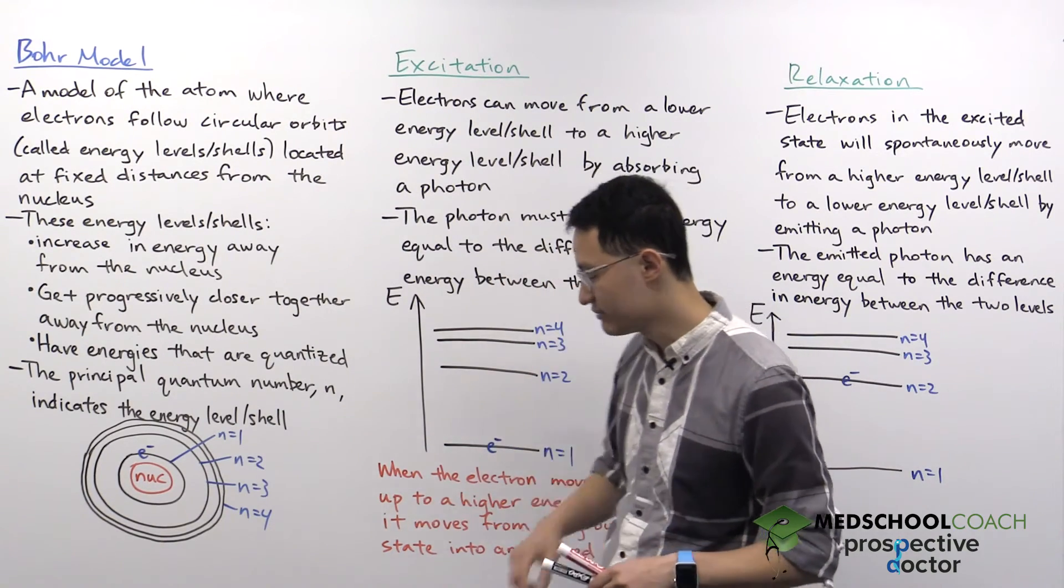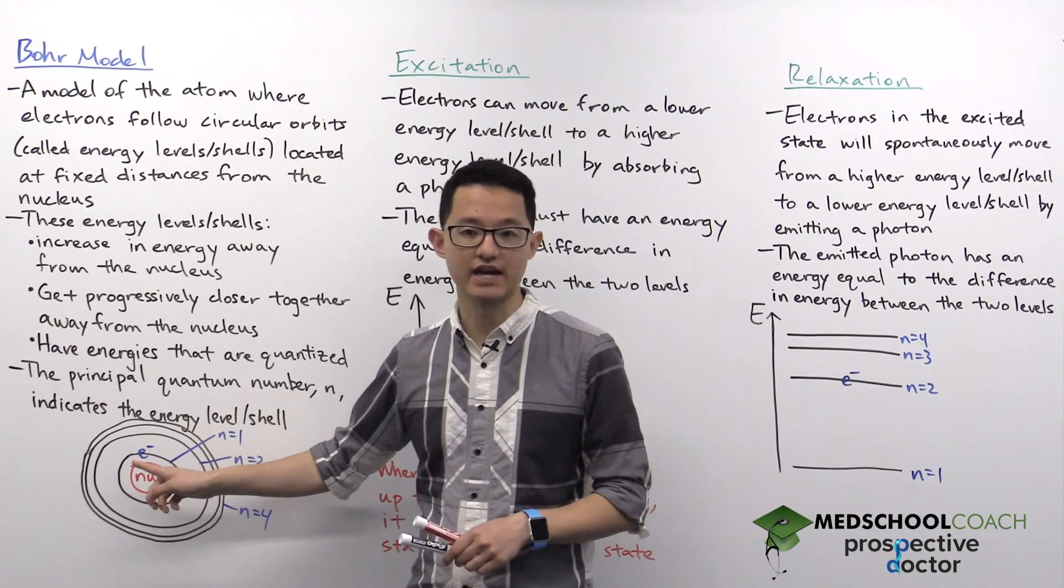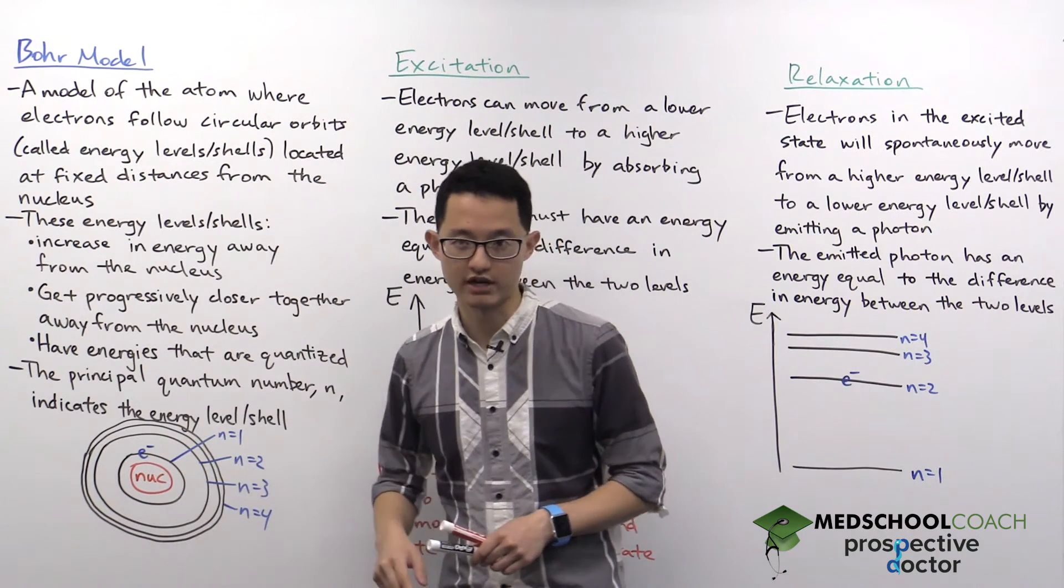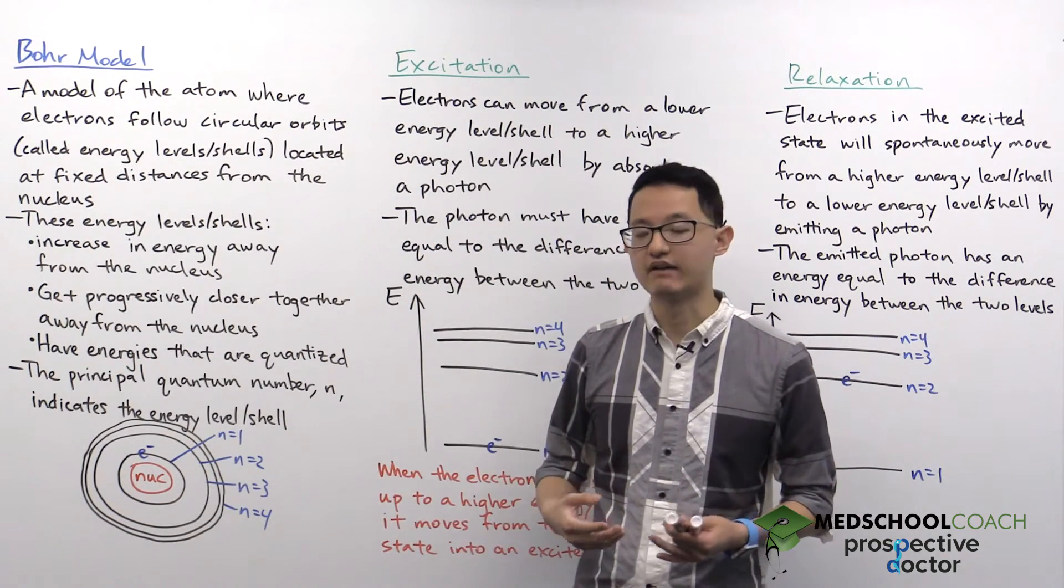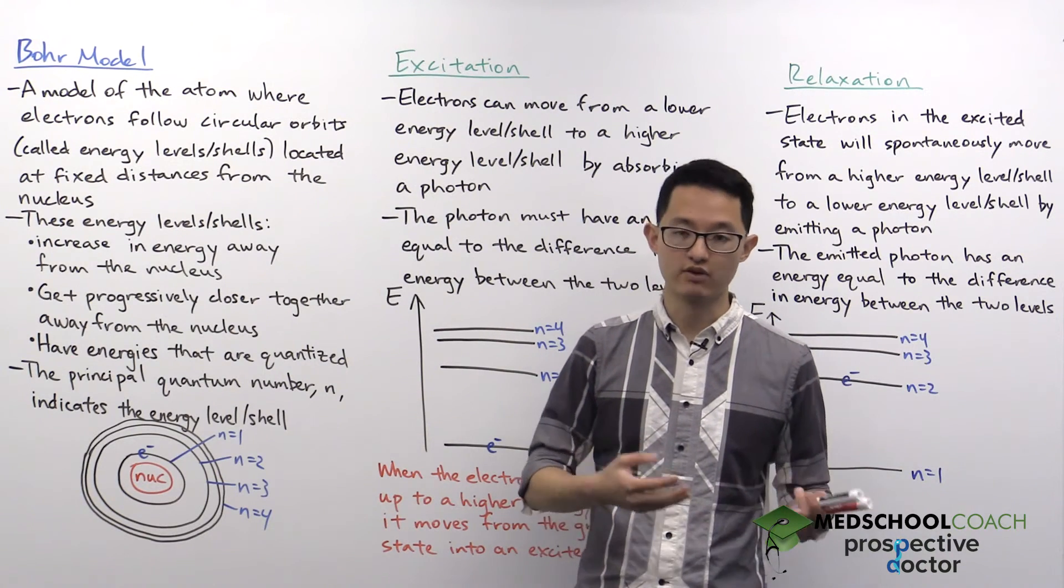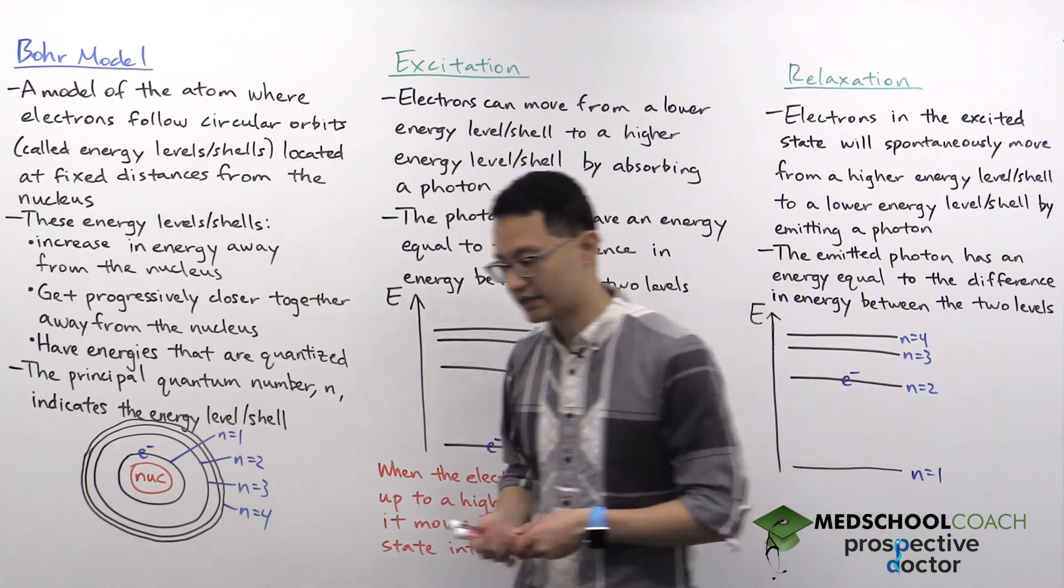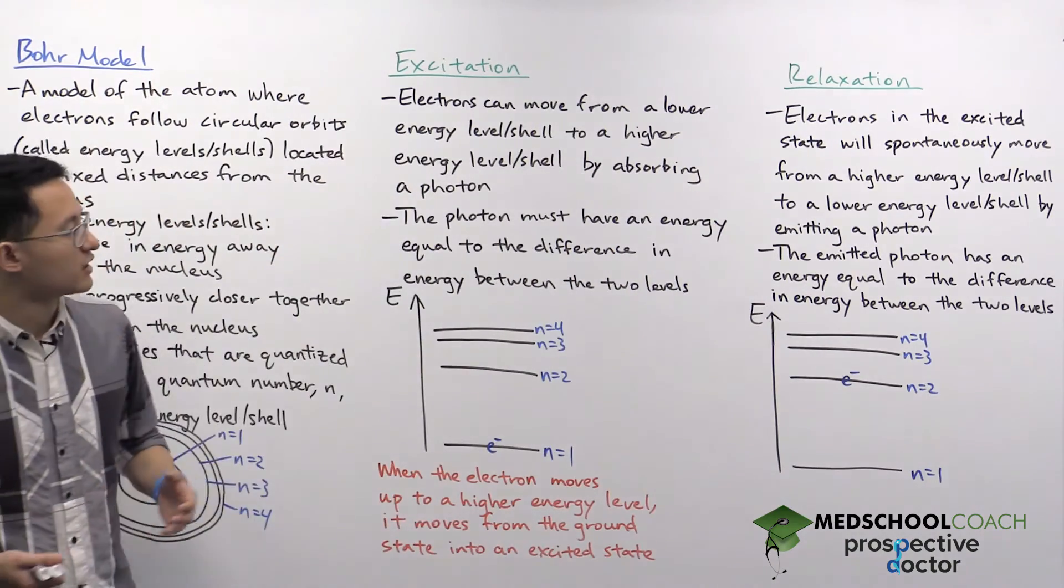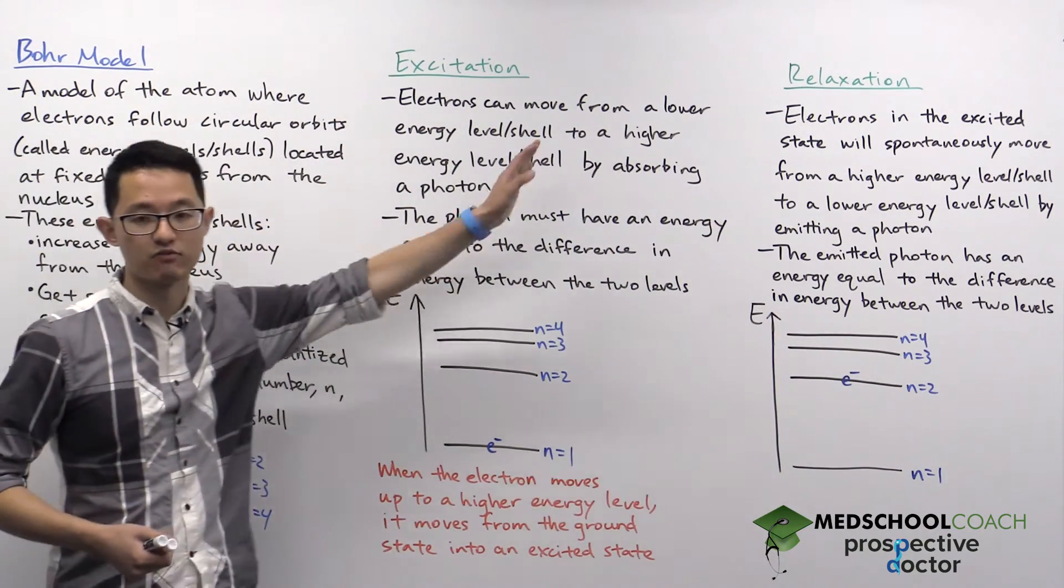As you can see in this diagram, we have an electron that's currently residing in the N equals one shell. Electrons don't always have to stay within the same shell. It's possible for them to move from one shell to the other. And these are processes called excitation and relaxation.